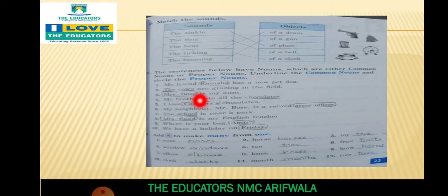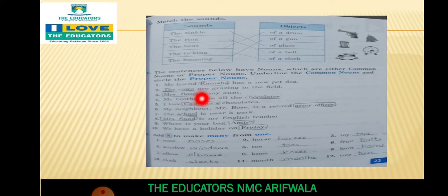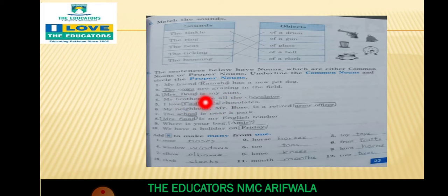The cows are grazing in the field. The cows کو ہم underline کر دیں گے - common noun ہے وہ۔ Mrs. Bose is my aunt. Mrs. Bose خاص ہیں، proper noun ہیں، اس لئے اس کو ہم نے circle کر دیا۔